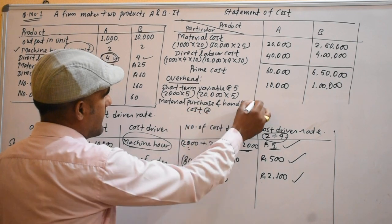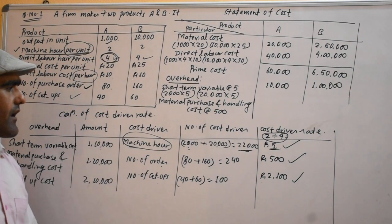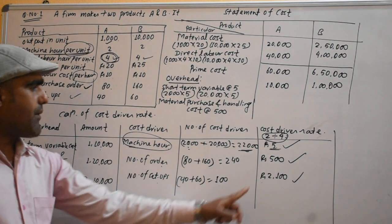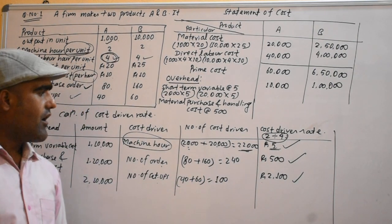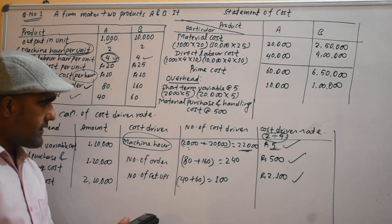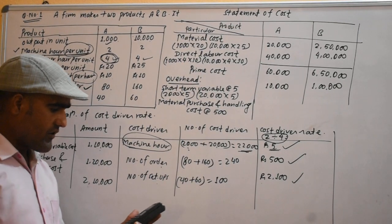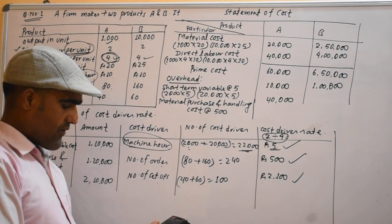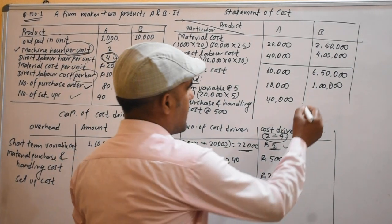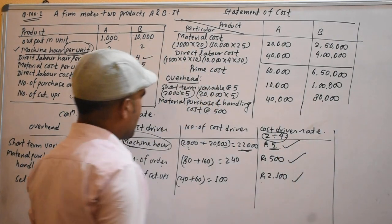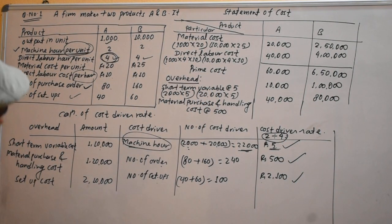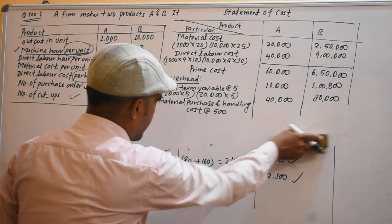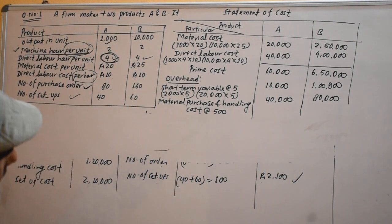The material purchase and handling cost rate is $500. This rate is used to allocate material purchase and handling costs to each product. Setup cost is the next activity. The setup cost rate is $2,000 per setup.